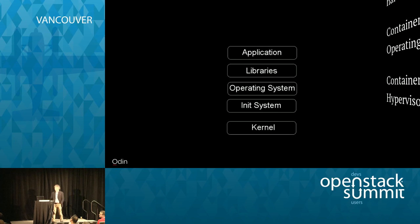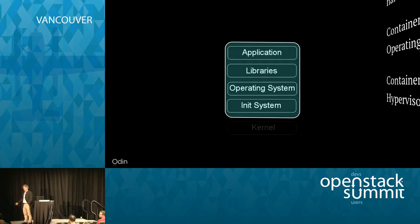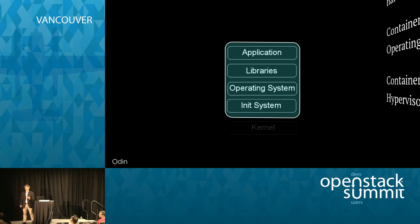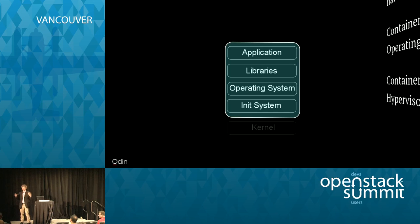A hypervisor guest has its own kernel, init system, operating system, libraries, and applications. A container, by contrast, shares the kernel with the underlying system. For an operating system container, you can put everything else inside the container and run it. This means you can use a container based on a Linux kernel to bring up Ubuntu, RHEL, Fedora, and everything else, because the Linux kernel is highly robust in its ABI layer. One of the great advantages of containerization is that because we all share the same kernel, which is designed for multitasking and resource sharing, containers are actually shared properly.